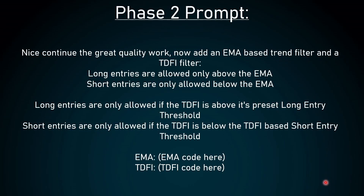Now let's move on. This will be our phase 2 prompt: Continue the great quality work — now add an EMA-based trend filter and TDFI filter. Long entries are allowed only above the EMA; short entries are allowed only below the EMA. Long entries are only allowed if the TDFI is above its preset long entry threshold, and short entries are only allowed if the TDFI is below the TDFI-based short entry threshold. At the bottom I paste the source codes for the EMA and TDFI.